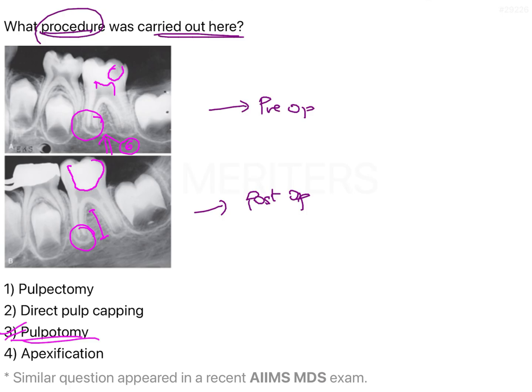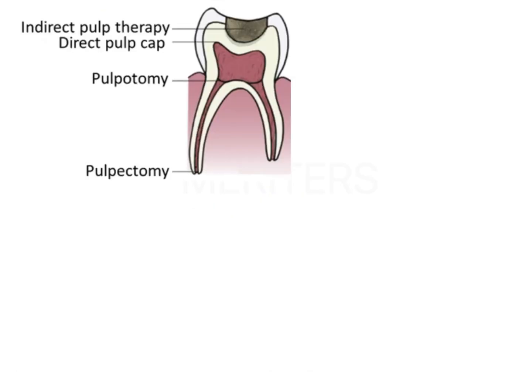We want the root end closure to take place, so we maintain the radicular pulp which is healthy. We only remove the coronal pulp which is infected, fill this up, and maintain the radicular pulp so that root end closure can continue. This is the technique of pulpotomy. Had it been pulpectomy, DPC, or apexification, we would have seen a different clinical picture.